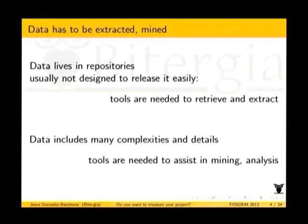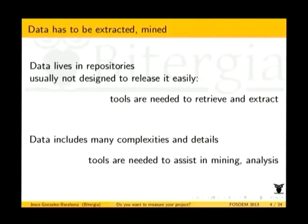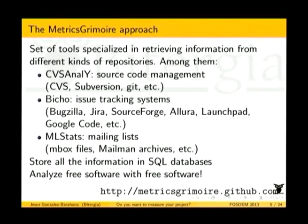Once you have the data in a database, there are many complexities and details. For instance, you have bots committing — bots are different from persons. You have persons committing with different identities and you want to track persons, not identities. Or you have bug reports and feature requests in the same issue tracking system and you want to tell one apart from the other. These are the complexities you have to deal with, and those are the tools we use to analyze the database after you have the data.